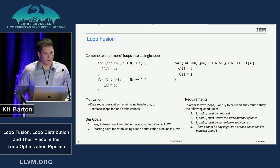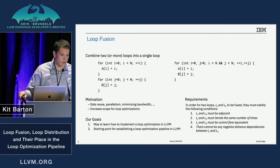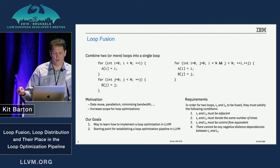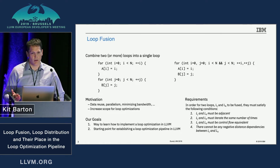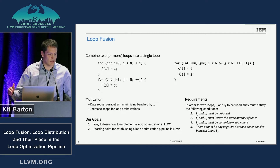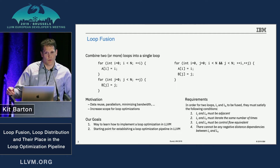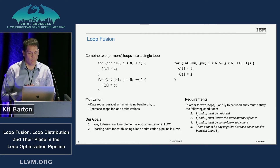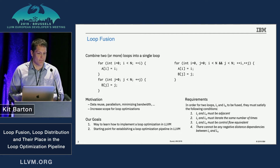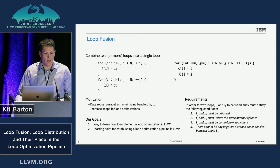A quick overview of what loop fusion is: the idea is fairly simple — you want to take two loops and combine them into a single loop or loop nest. There are several motivations for this from a performance point of view: increased data reuse, parallelism, minimizing bandwidth. You also do fusion as a way to enhance the scope for other loop optimizations.